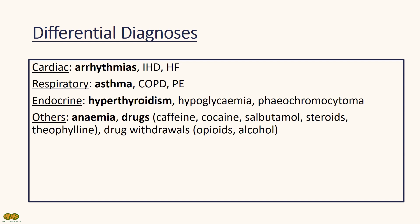There are many different organic diseases that can present similarly to GAD. These include cardiac conditions like arrhythmias, respiratory ones like asthma, and others such as hyperthyroidism, anaemia, and drug-induced causes which includes caffeine, salbutamol, cocaine, steroids, and alcohol or opioid withdrawals.